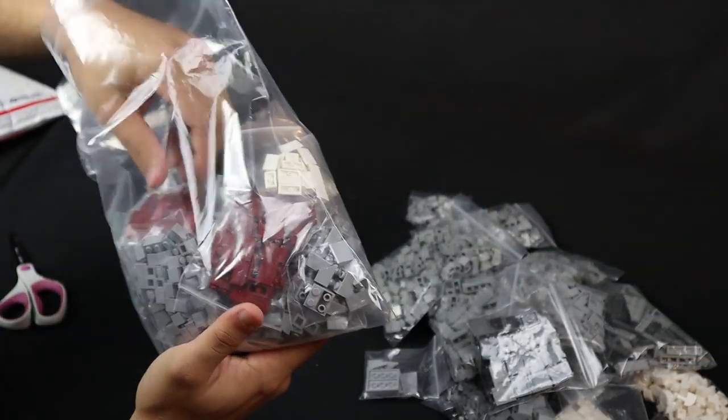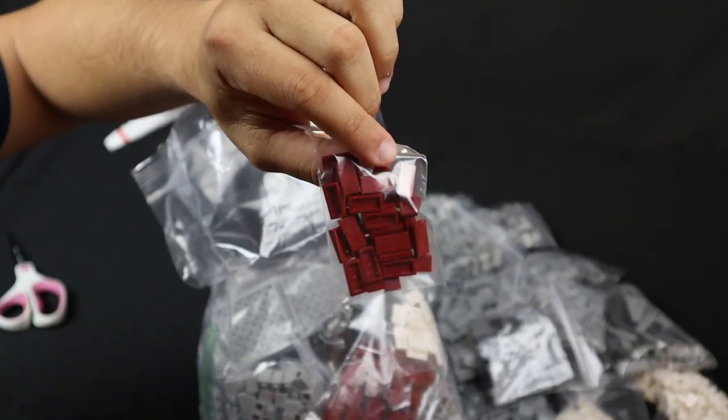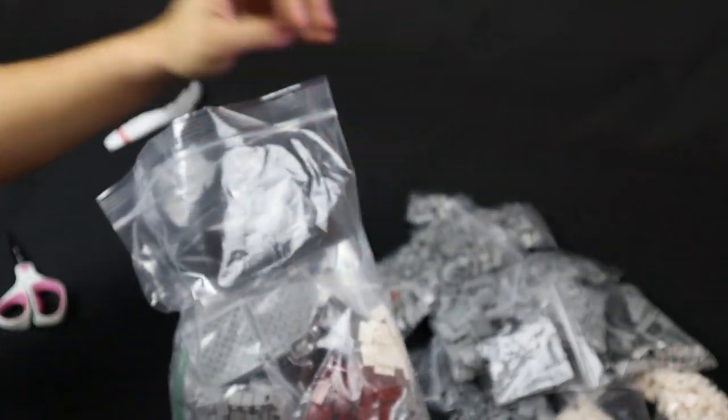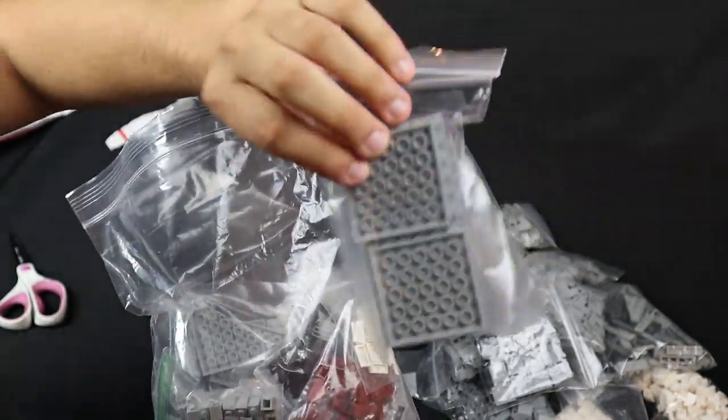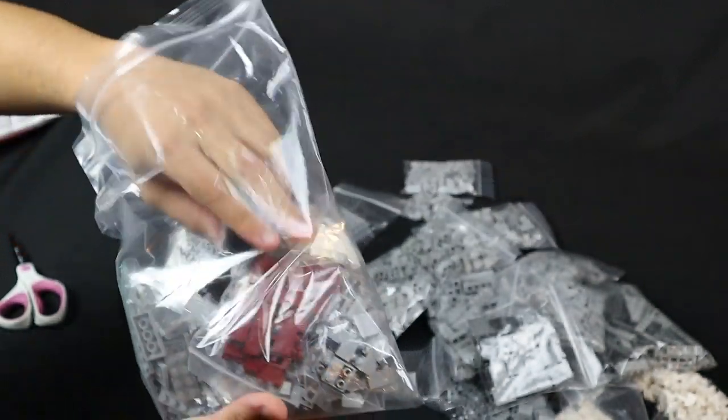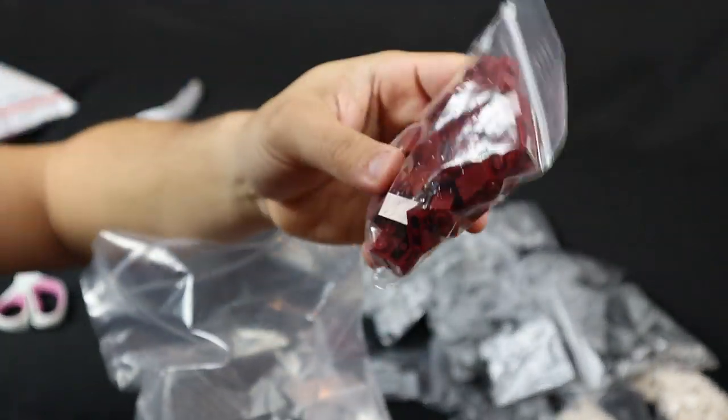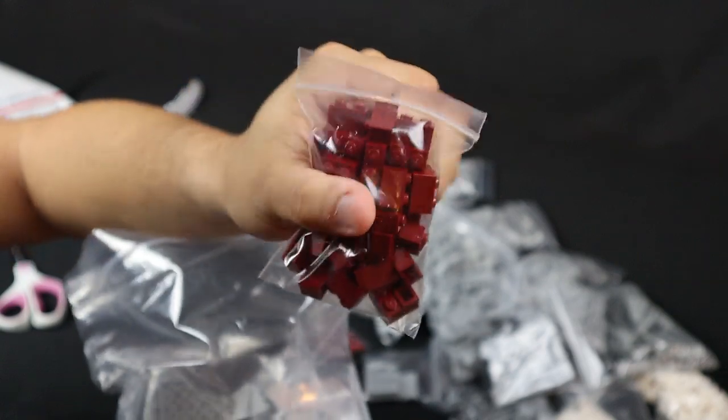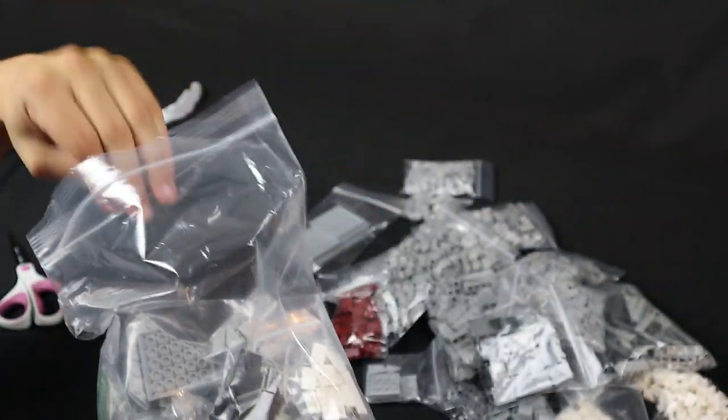We have some 1x2 dark red tile which is going to be used for giving a really cool pattern on the top. Here we have some 6x6 light bluish gray plates, some more standard 1x1 light bluish gray brick. We also have some 1x2 dark red brick. This is going to be used for the front side of the barracks where the red's showing through, so that's really cool.